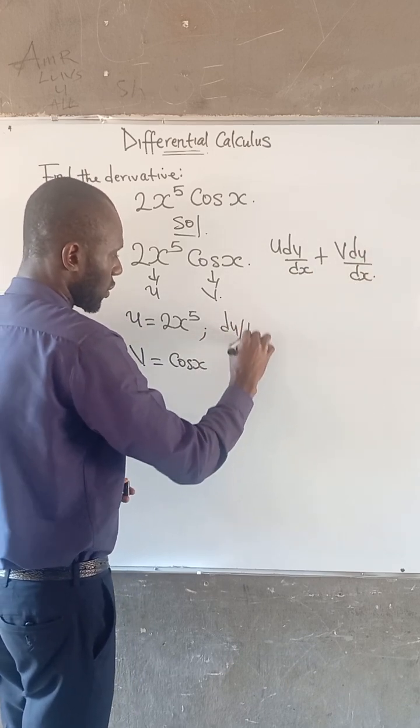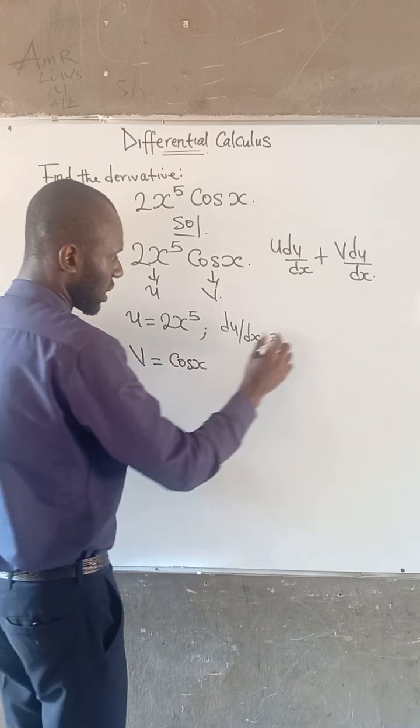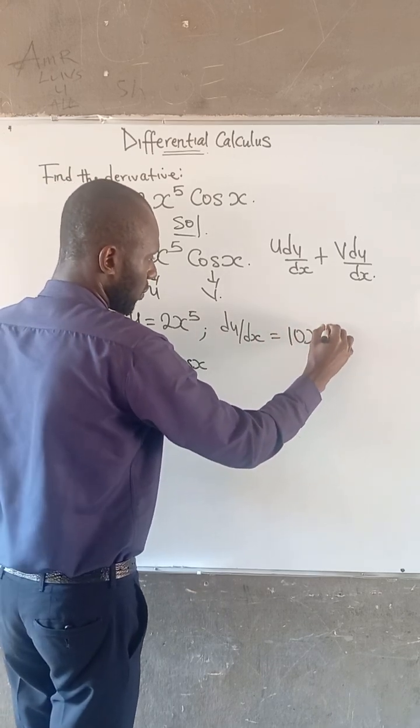So du/dx is equal to, if we differentiate this, we have 10x to the power of 4.